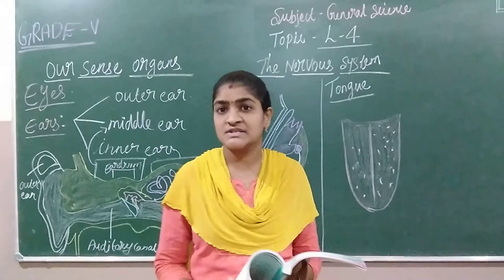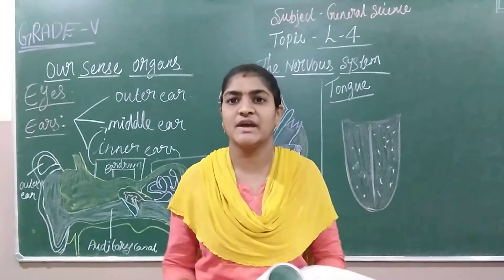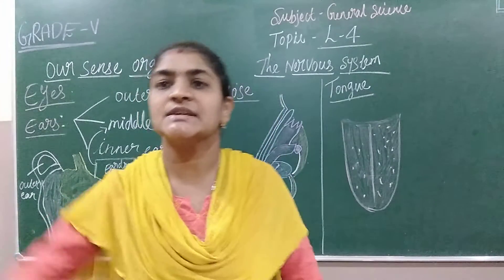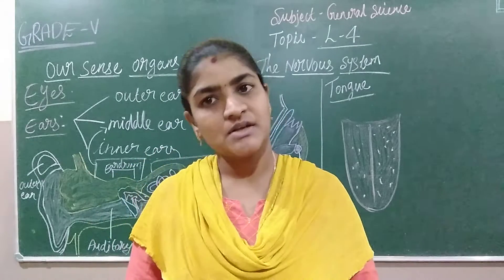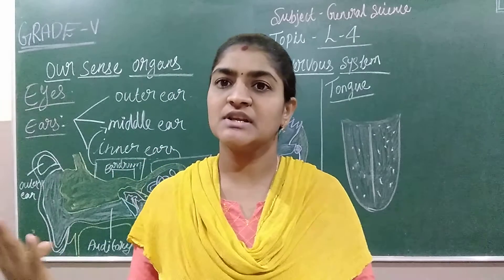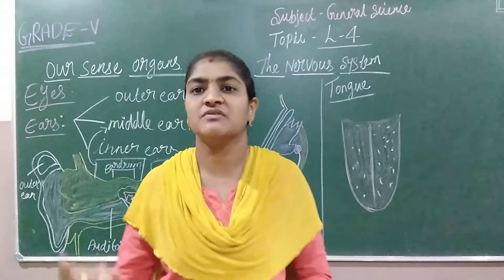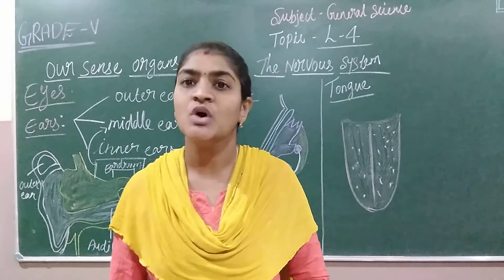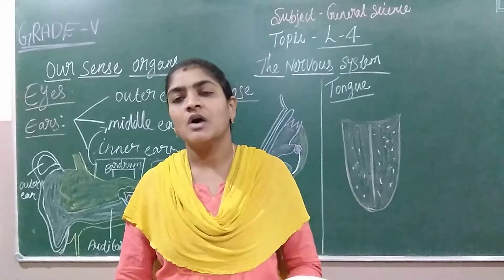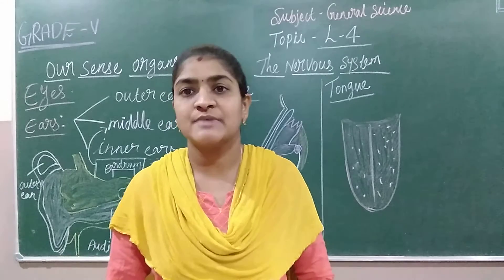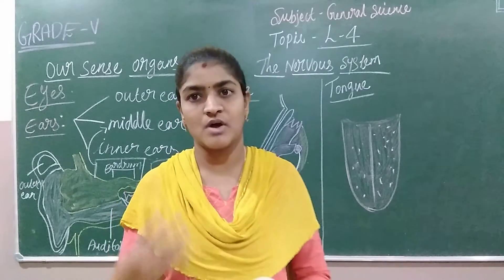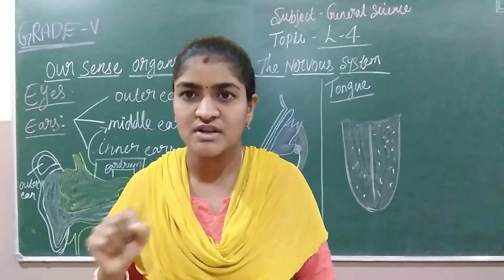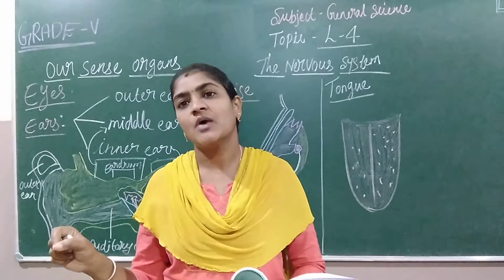We also studied about the sense organs. We have five sense organs, and these sense organs are interlinked with the nervous system. That is the reason whatever is happening in the environment, we can be able to feel it and respond towards it. First I explained about the eyes, drew the structure of the eye, and mentioned what parts are present.